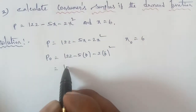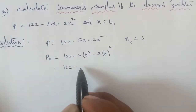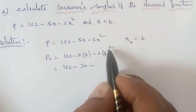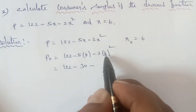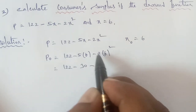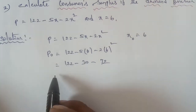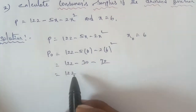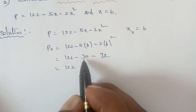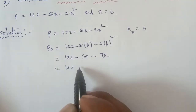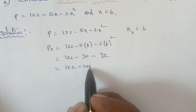So next: 122 minus 5 times 6 is 30, and minus 2 times 6 squared. 6 squared is 36, and 36 times 2 is 72, which is negative 72. So 122 minus 30 minus 72 gives us P₀ equal to 20.